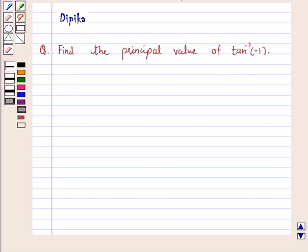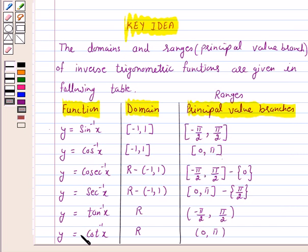We know that the range of the principal value branch of tan inverse is open interval minus pi by 2 to pi by 2. So this is the key idea behind this question.